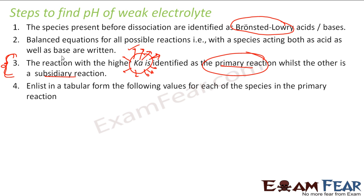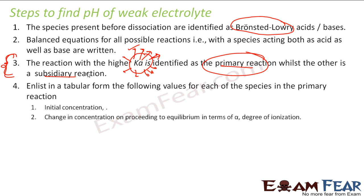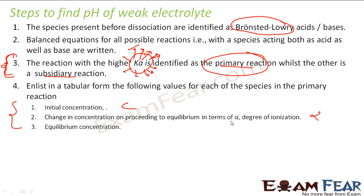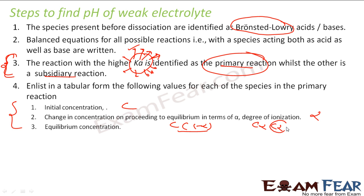We will put everything in a table form — the initial concentration, the degree of dissociation, and the equilibrium concentration. For example, the initial concentration was C and the degree of dissociation is alpha. The equilibrium concentration will be C times (1 minus alpha) for the reactant, and C·alpha and C·alpha for the products.